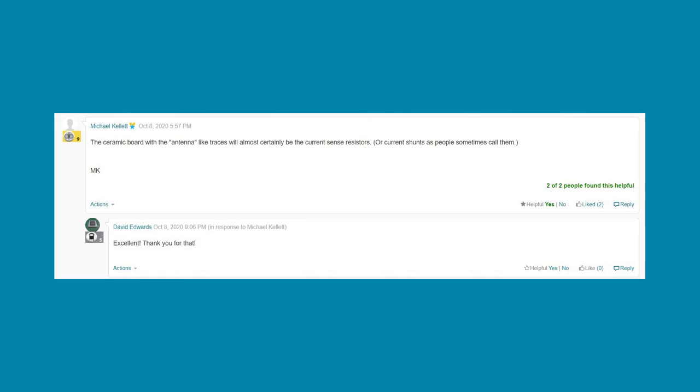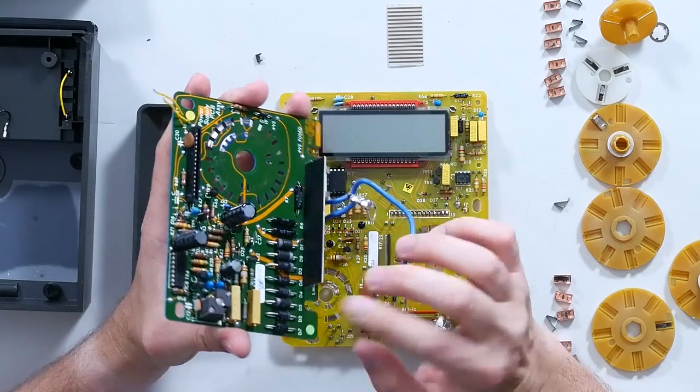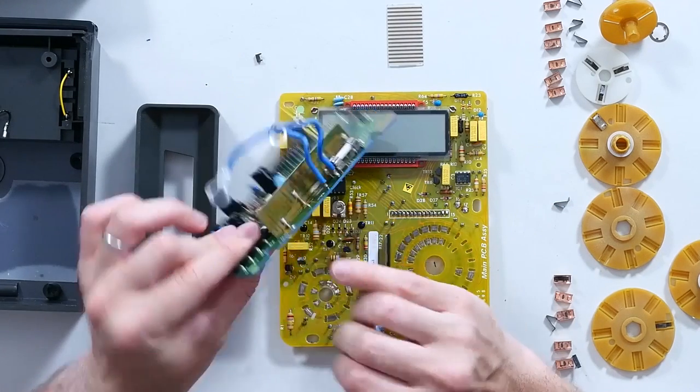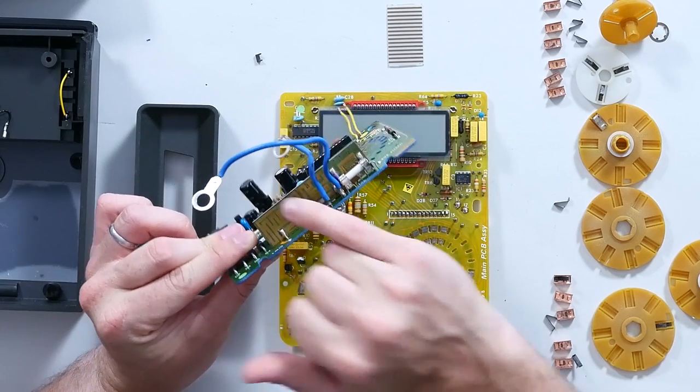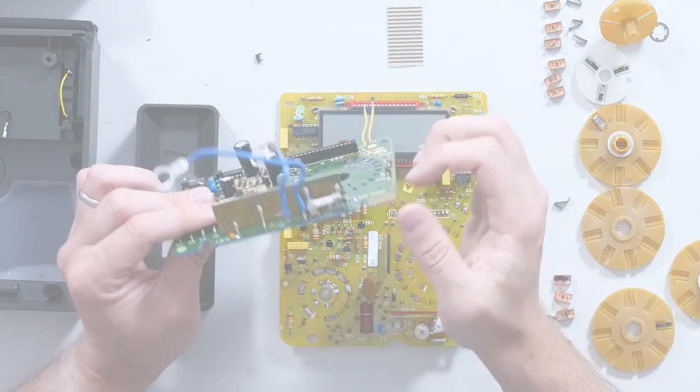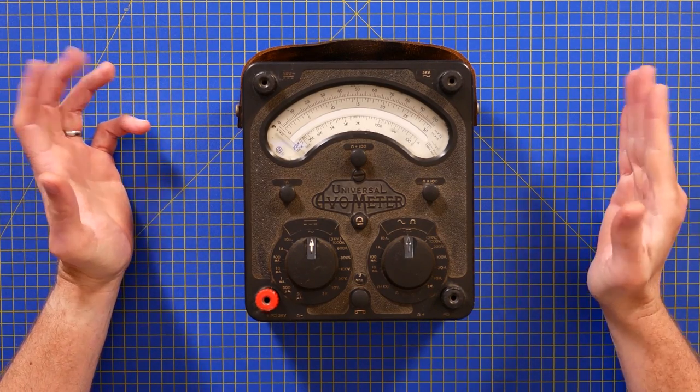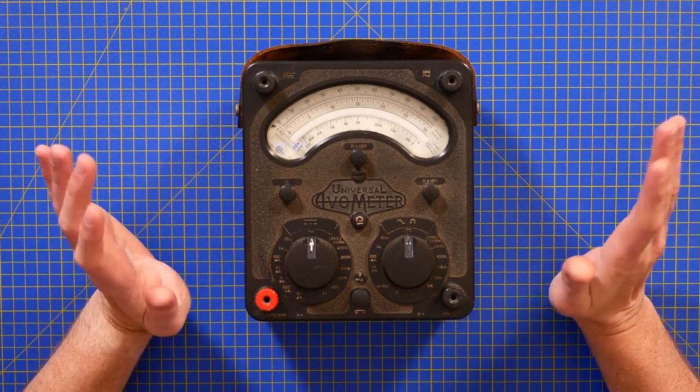Before we dive really into this teardown, I just wanted to say thank you to Michael Kellett over on the Element 14 community. During the digital multimeter teardown I found this little daughter board on the power board and thought it looked like an antenna board, very similar to some of the antenna traces we've seen on Bluetooth and Wi-Fi. Obviously I should have known better, they were the current shunts. Thank you so much for letting me know and clearing that up.